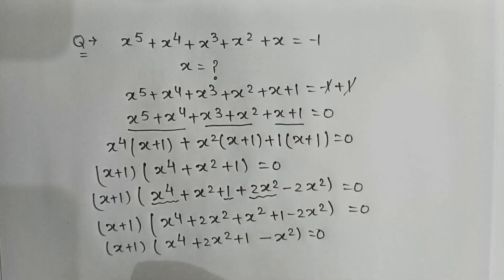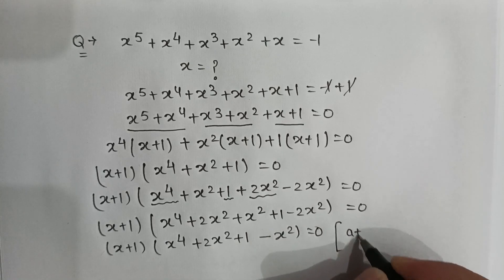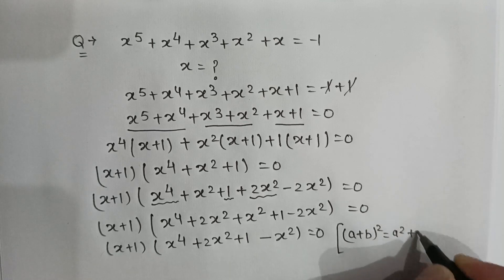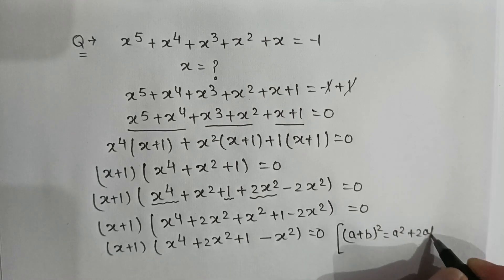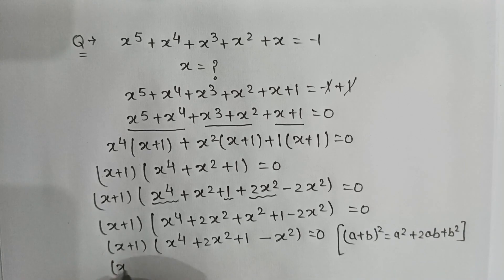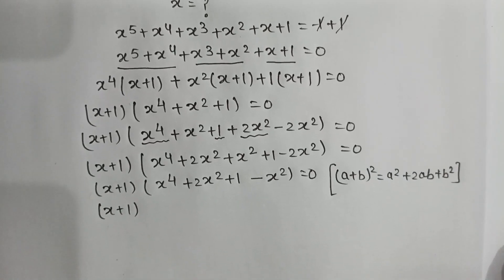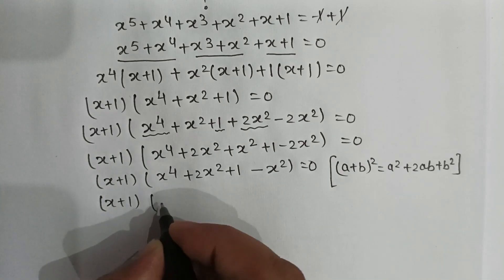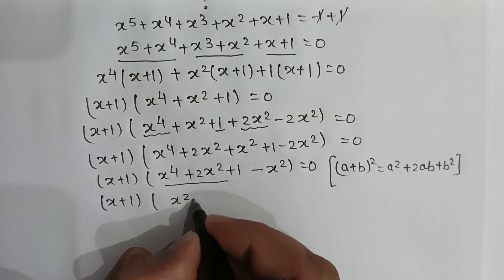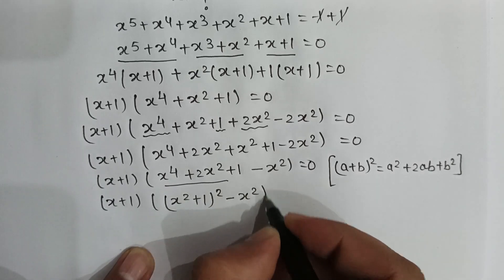As we know that (a plus b) squared can be written as a squared plus 2ab plus b squared. So it will be (x plus 1) multiplied by (x squared plus 1) whole squared minus x squared is equal to 0.